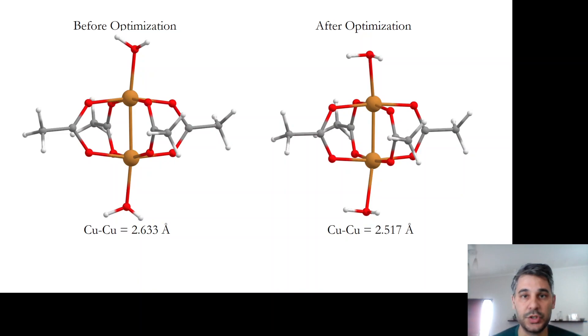I'm showing here the structural optimization. I use the TPSSH functional with the DEF2 TZBP basis set for some of the optimizations. For the copper acetate crystal structure on the left, there was no hydrogens. I put the hydrogens myself based on normal carbon hydrogen and oxygen hydrogen distances and angles based on other complexes. The crystal structure has a copper copper distance of 2.633 angstrom. After optimization, you can see there's some change, but it's not a dramatic change. The copper copper distance has decreased slightly to 2.517 angstrom.